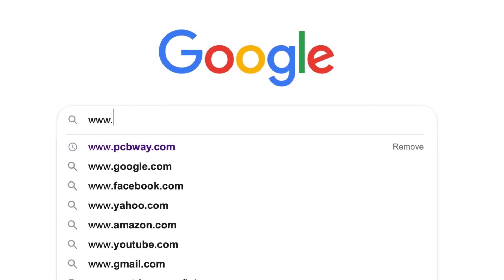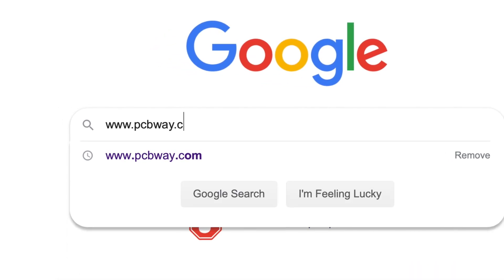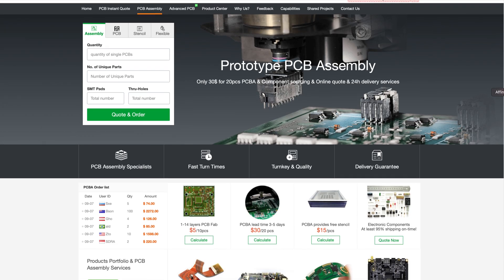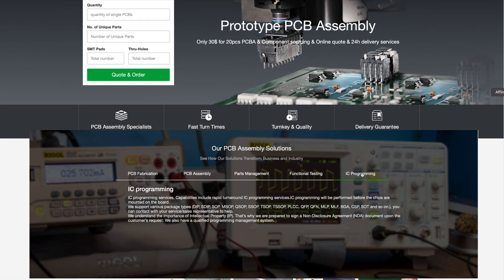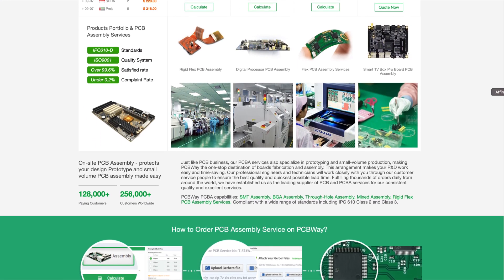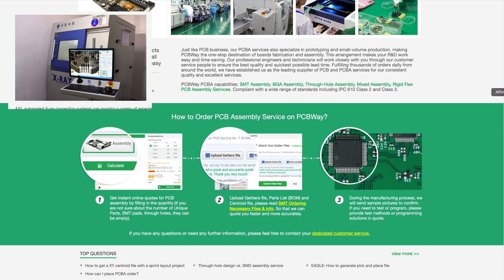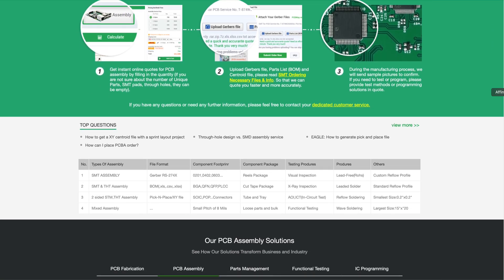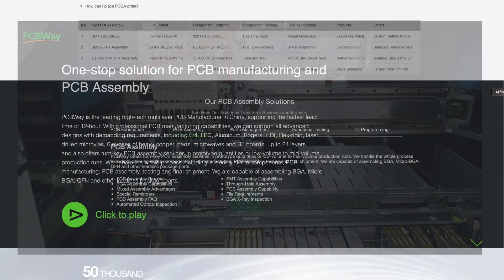Did you know my sponsor PCB Way offers printed circuit board assembly services? That's right, right now it's only $30 for 20 PCBs plus component sourcing. Online quoting is also available and they currently have about a three to five day turnaround time on orders big or small. Click the link in the description to get your next project started. PCB Way can help.